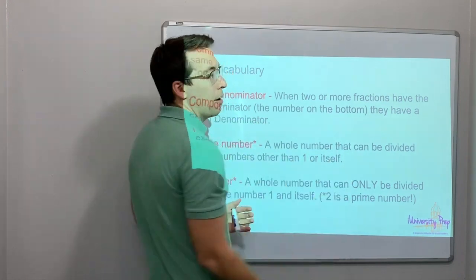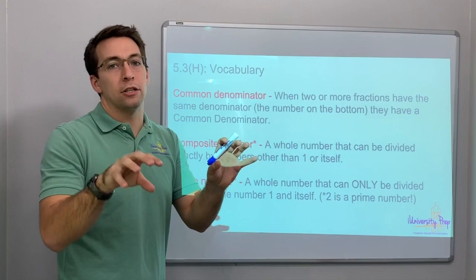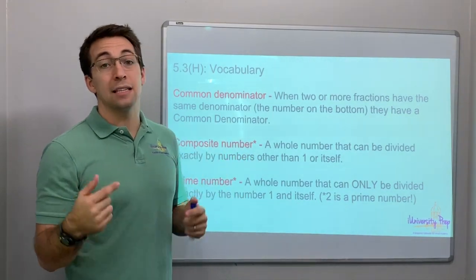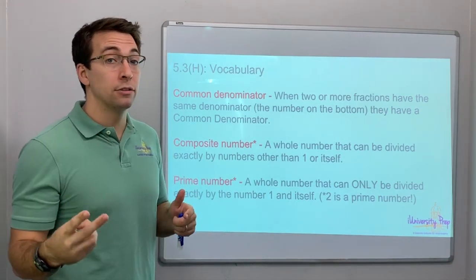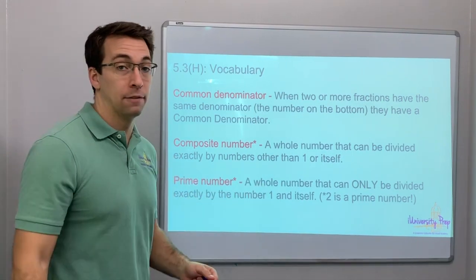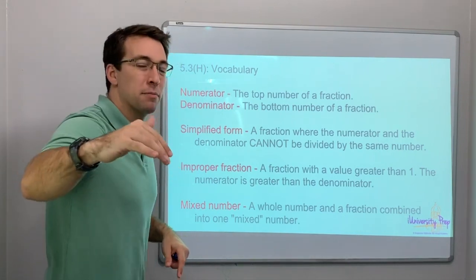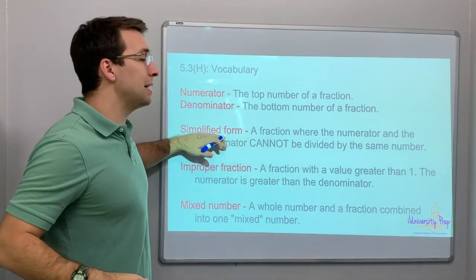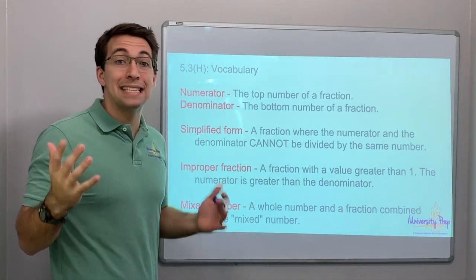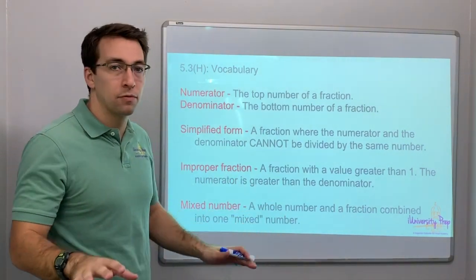Vocabulary that we need: common denominator — that's when you have the same denominator for two different fractions, so they're compatible and easy to use. Composite number — a number with more than two factors. A prime number only has two factors: one and itself. Numerator is the top number, denominator is the bottom number of a fraction. Simplified form means you cannot divide the numerator and denominator by the same number anymore — it's as small as it can get, it's its simplest form.